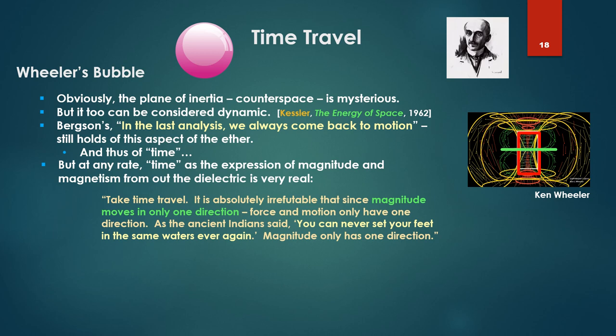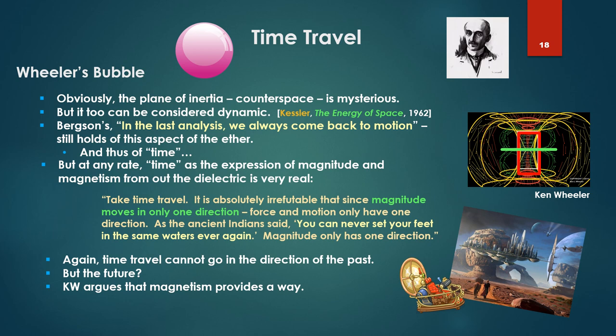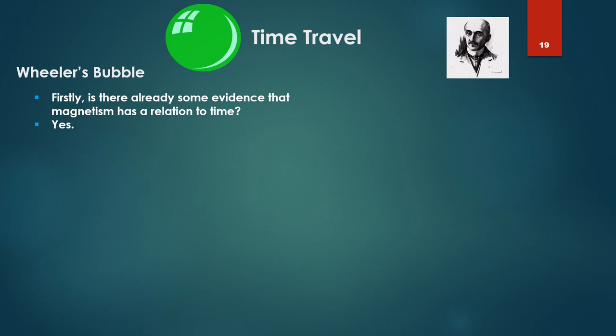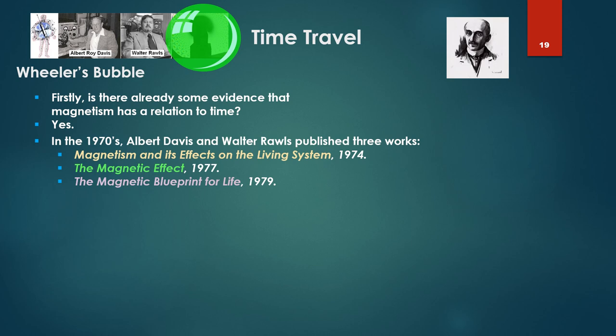Ken says, take time travel. It is absolutely irrefutable that since magnitude moves in only one direction, force and motion only have one direction. As the ancient Indian said, you can never set your feet in the same waters over again. Magnitude has only one direction. Very consistent with what we just discussed with Bergson. Time travel cannot go in the direction of the past, but the future. Ken argues that magnetism provides a way. Firstly, is there already some evidence that magnetism has a relation to time? Well, yes.